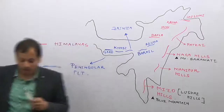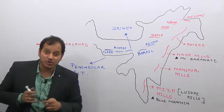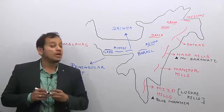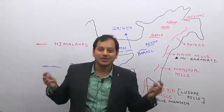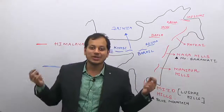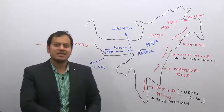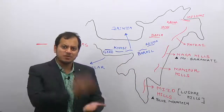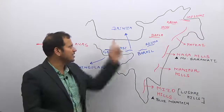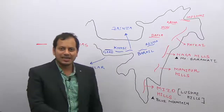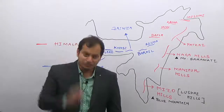One more small thing: where is Cherrapunji located? It is the area which receives the highest rainfall in the world. Where is it located? You will say it is in the North East — but below which hills? Below Garo Hills, below Khasi Hills, or below Jaintia Hills? Wait for that answer in the Peninsular Plateau section.